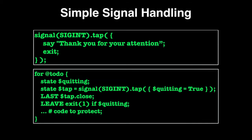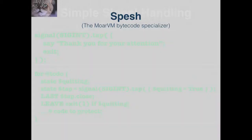We have simple signal handling in Perl 6. If you want to catch Control-C, this is a little more elaborate — it allows you to actually finish the loop before exiting.